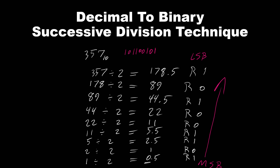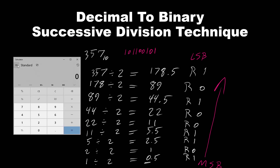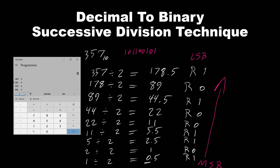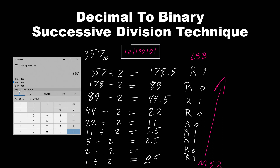Let's see it using the calculator. Changing the standard view to the programmer view. Decimal is already selected. Enter 357. It gives us a binary value of 101100101, which matches what we calculated.